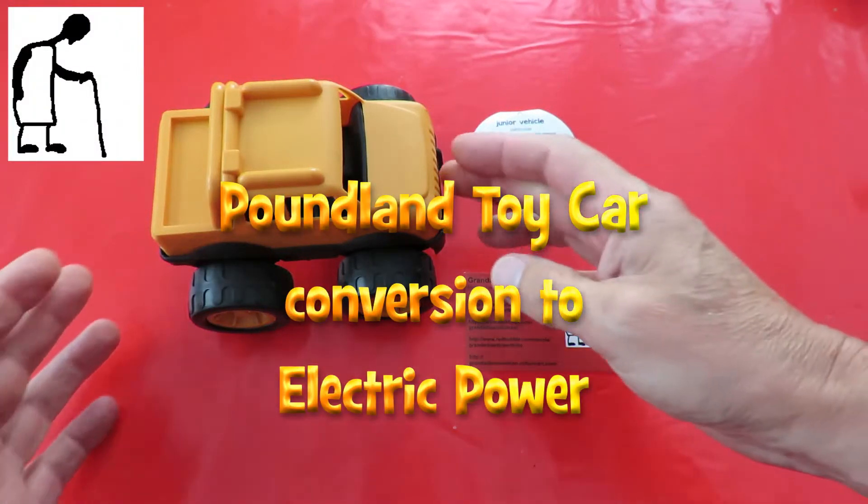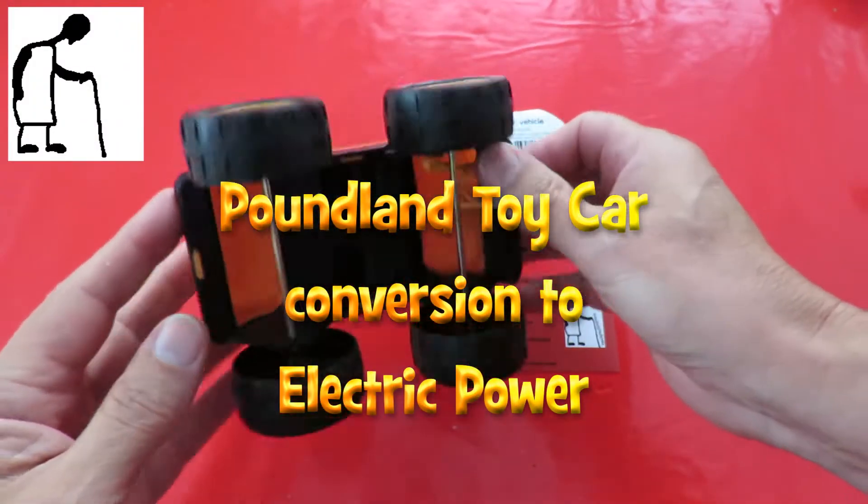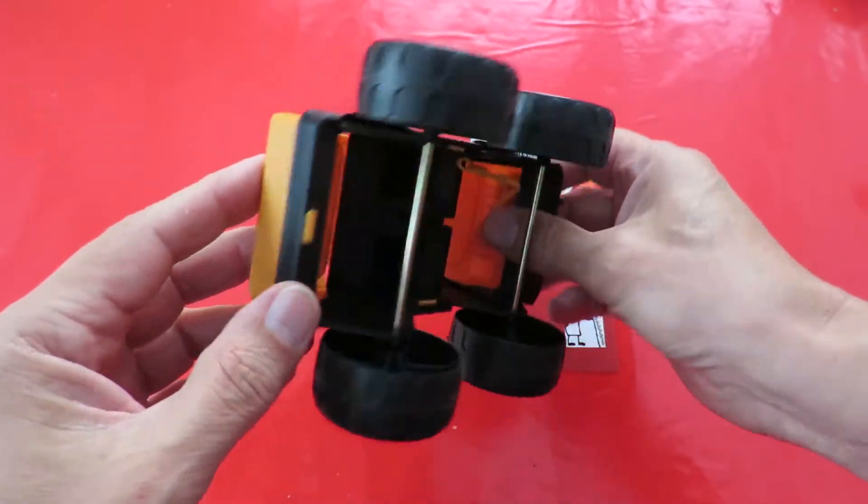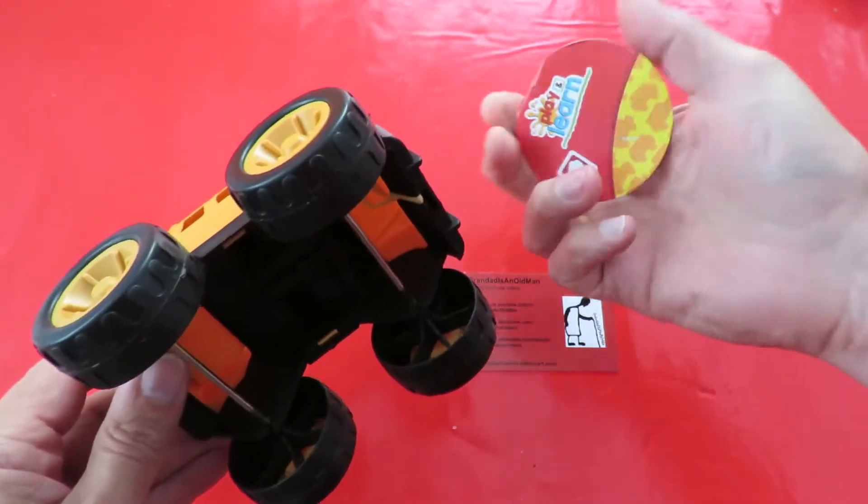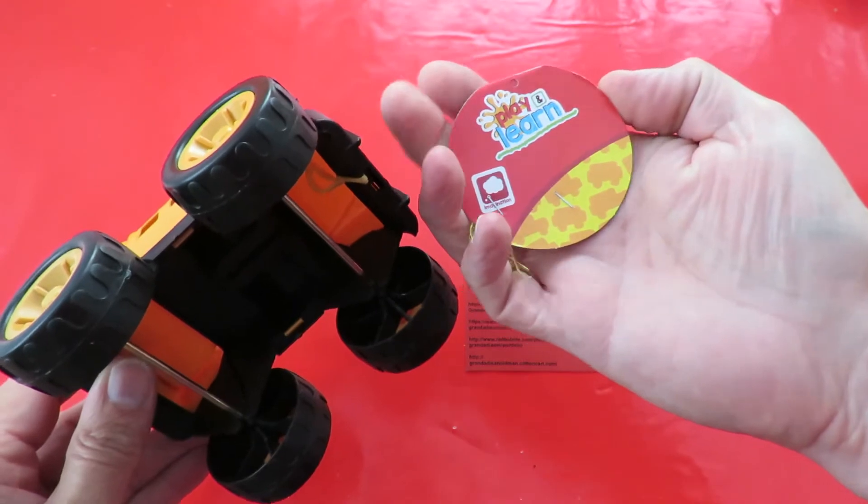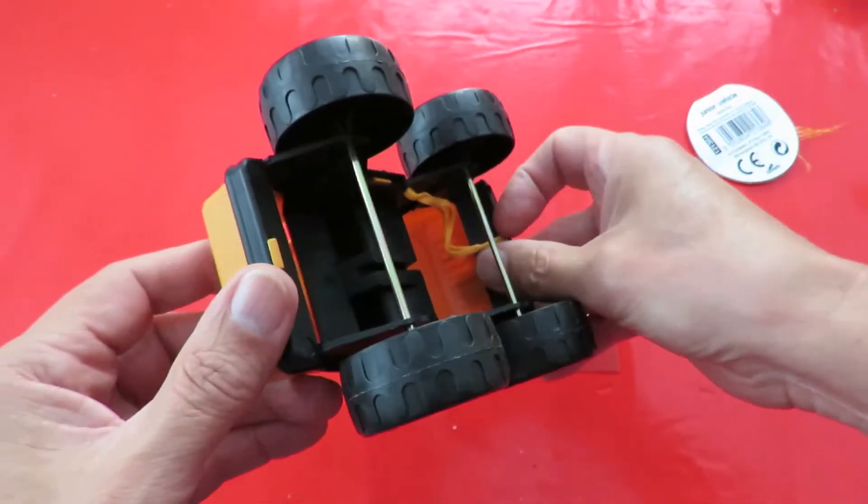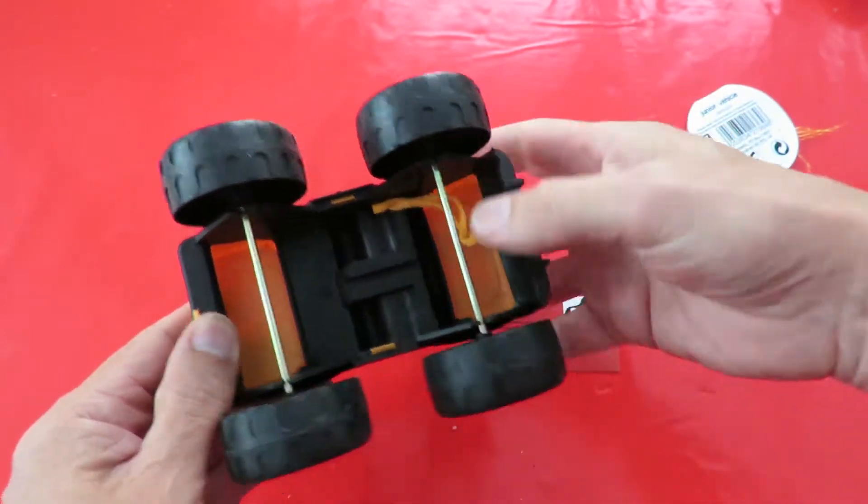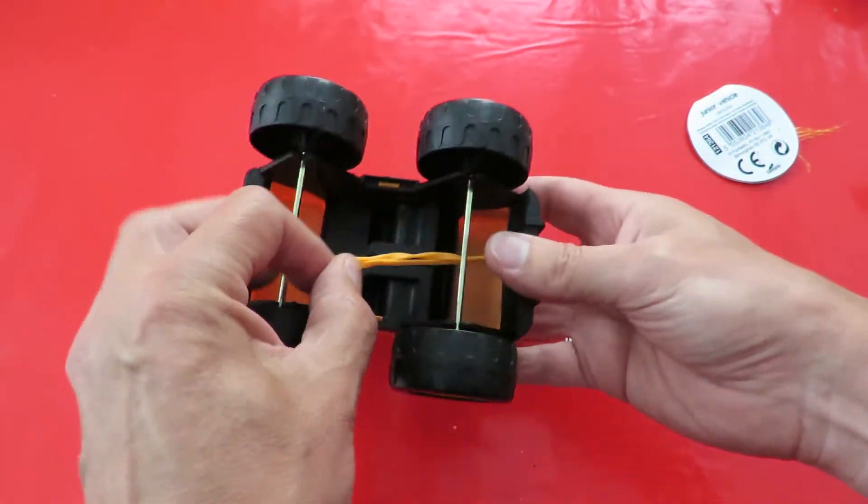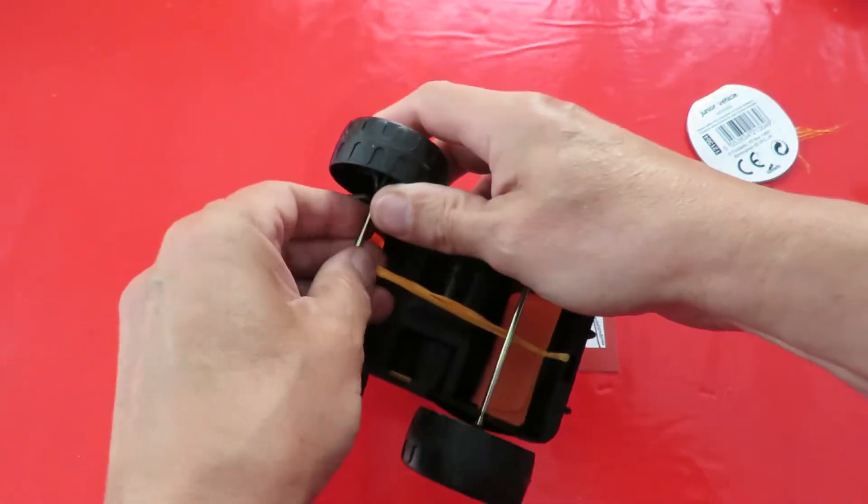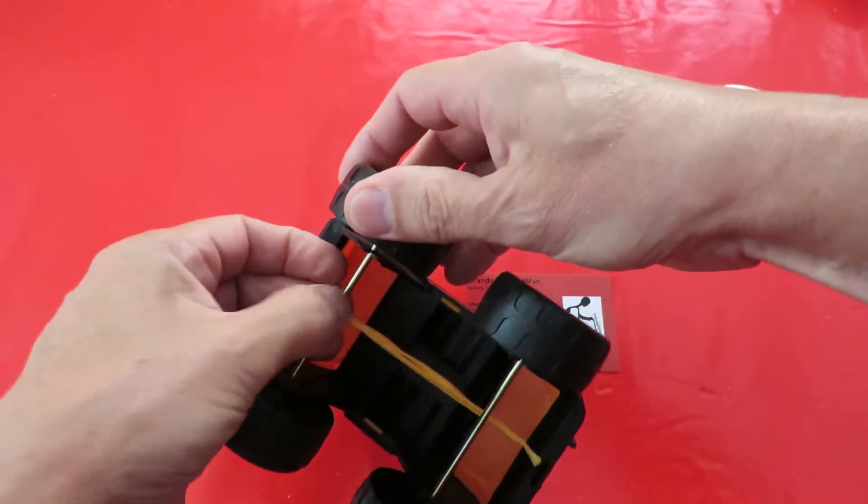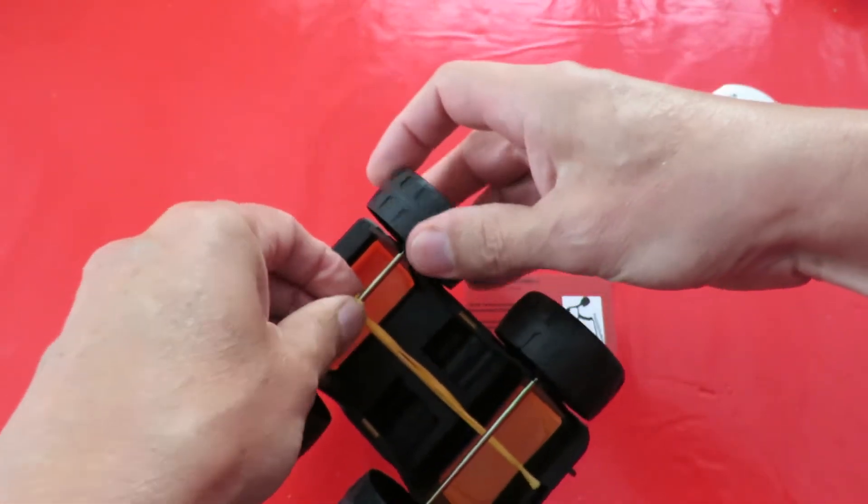Hi guys, I did a video where I converted this little cheap toy from Poundland, a Play and Learn Junior Vehicle, converted it to rubber band power just by adding a rubber band and wrapping it around the back axle.